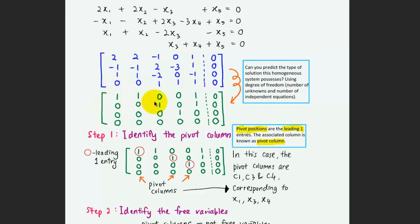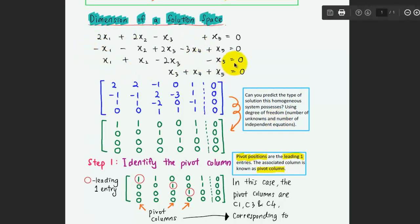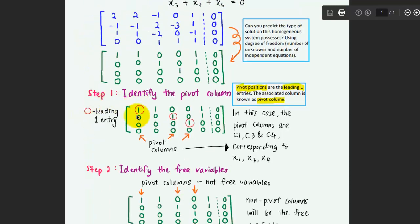From inspection I can see that we have three leading ones, so we have three independent equations. We have five columns, which means we have more unknowns compared to the number of equations. Most probably we will have infinitely many solutions, which means we have a free variable. So to find the dimension of the solution space, the first step is to identify the pivot columns.